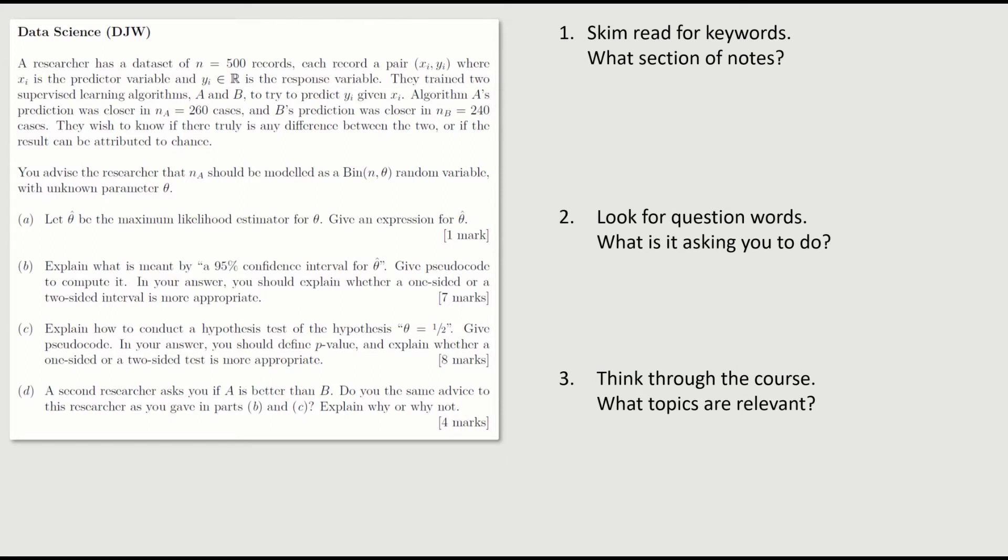First thing to do when you see a question is skim read and look for keywords and figure out which section of the notes this question is about. Skimming through, these are the keywords that catch my eye. Predictor variable, response variable, supervised learning, maximum likelihood estimator, confidence interval and hypothesis test. The first few look like they're about supervised learning. And then later on, definitely confidence interval and hypothesis test.